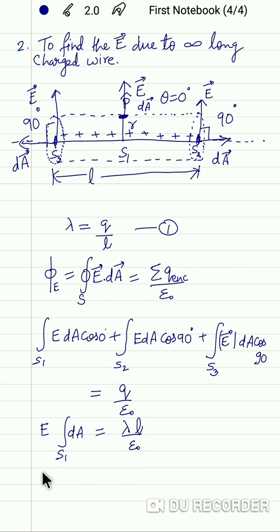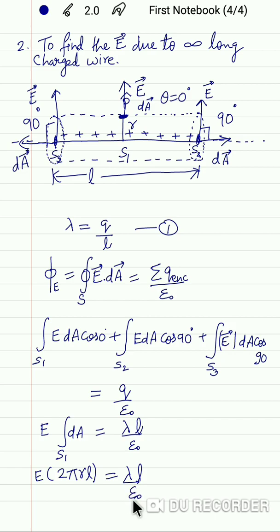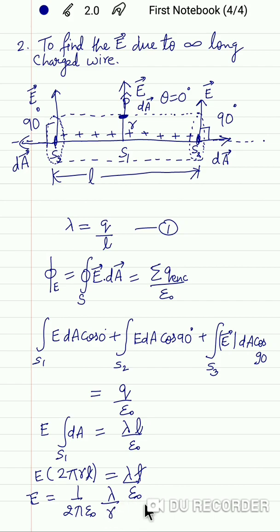The integration of dA for the curved surface equals 2·pi·r·l. So we have E times 2·pi·r·l equals lambda·l upon epsilon naught. The l's cancel, giving the electric field intensity E equals lambda upon 2·pi·epsilon naught·r.